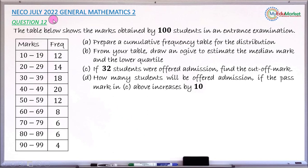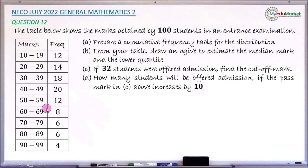This is NECO July 2022 General Mathematics Paper 2. We are answering question number 12. The question says the table shows the marks of 100 students in an entrance examination. Marks range from 20-29 scored by 14 students, up to 90-99 scored by four students.